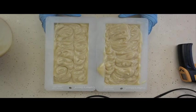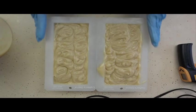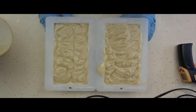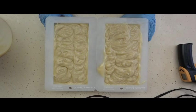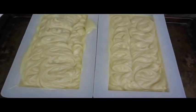So cold process oven process soap is kind of like a hybrid between cold process soap and hot process soap. We want to ensure that it goes through a full gel stage, but we don't want it to do anything crazy like hot process soap. So it's kind of tricky. You have to get used to it. But once you learn how to do it, you'll be an expert.